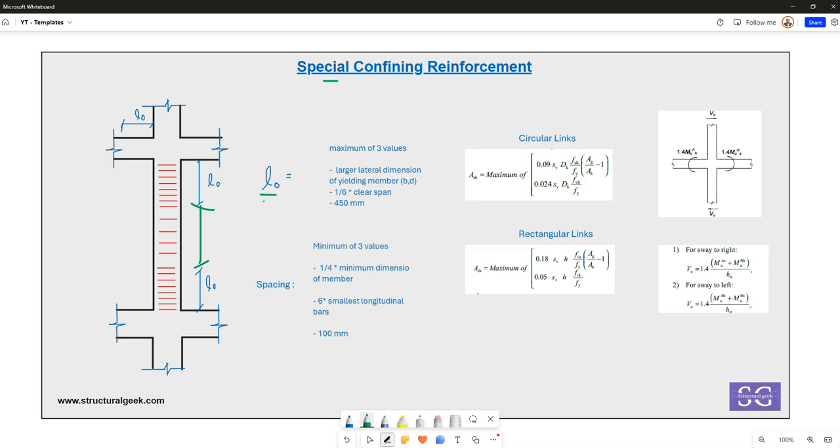The confining reinforcement should be provided for a length L0. What exactly is L0 and how do we compute it? L0 basically comes from three values from the column dimensions. It should be the maximum of these three values: the larger dimension of the column,